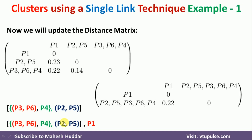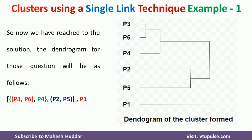This is how we form clusters using the single-link technique. Now we will understand how to draw the dendrogram. First, P3 and P6 were merged, giving us the first merging point. Then P4 is added to that. P2 and P5 were merged separately, giving another merging point. Merging those two groups gives the next point, and finally P1 is merged into the entire cluster, giving the final merging point. This is the dendrogram for the resulting clusters.